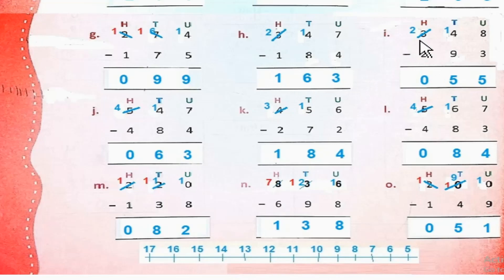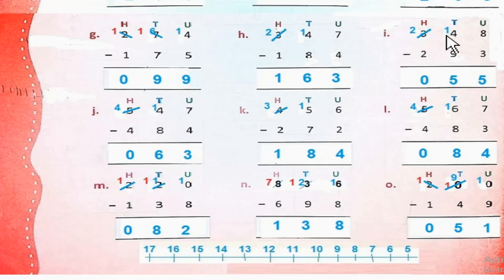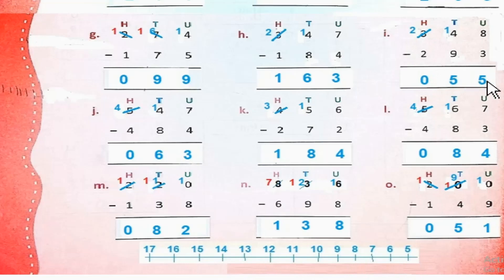Part I: 348 minus 293. 8 minus 3 = 5. 4 से 9 minus नहीं होता। So हम 1 borrow करेंगे — 3 से 1 borrow होगा तो यह 2 रह जाएगा, और यह 14 tens हो जाएगे। 14 minus 9 = 5. 2 minus 2 = 0. So the answer is 55.